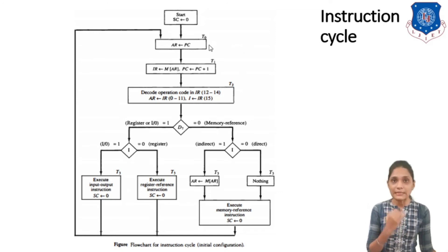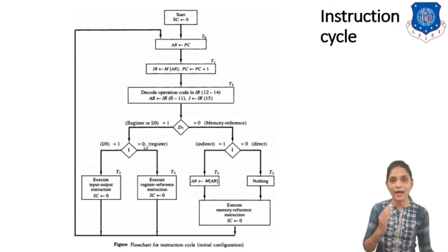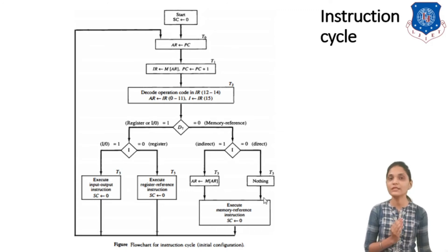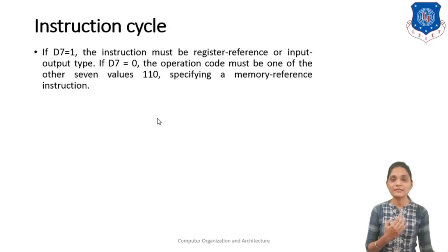To summarize: instruction fetching uses T0 and T1 timing signals; decoding uses T2; and execution uses T3 and T4 depending on instruction type. If D7=1, it is register reference or IO reference — check I to distinguish. If D7=0, it is a memory reference instruction — check I for direct (I=0) or indirect (I=1) addressing. At the end of each instruction cycle, the sequence counter is set to 0.